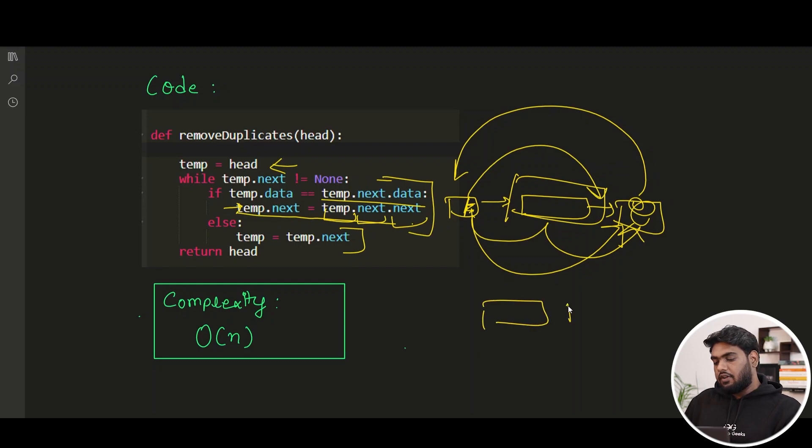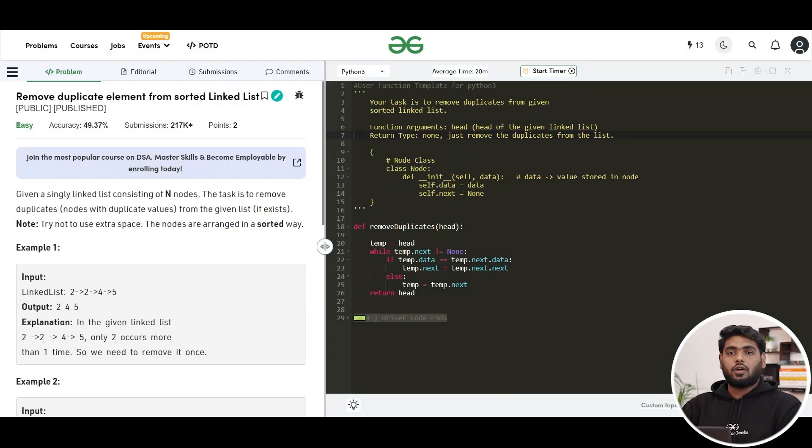And if that is not the case, that means if we are having our normal values that are not getting repeated, then what we will do? I'm having two here, four here. Then in such cases, I'm just going to move my temp one step ahead. That means I do not have to remove any element. So once I'm doing it, the temp will be shifted here until we are on the last node. So once we have traversed the linked list completely, all the repeated elements will be removed.